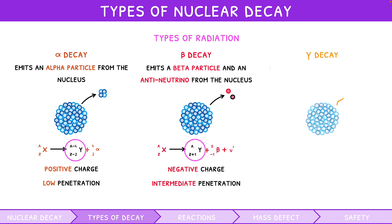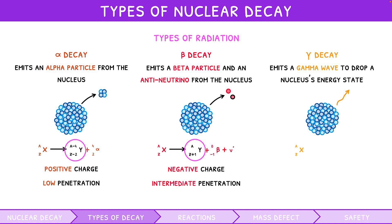Gamma decay emits a gamma wave that drops the nucleus to a lower-energy state. Since there is no change in the nuclear constituents, the general equation is given by the initial atom decaying into the same atom plus a gamma particle. Since this is a wave, gamma decay has no charge, and since it has no mass, it has a high penetration depth.